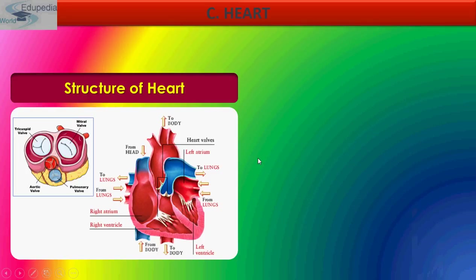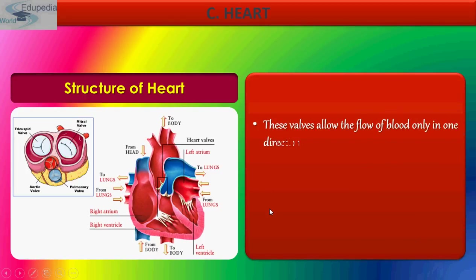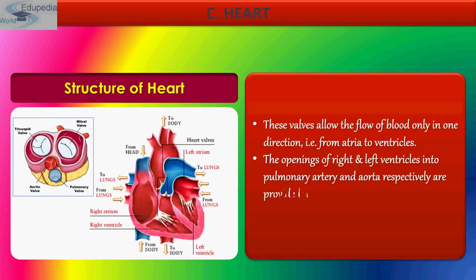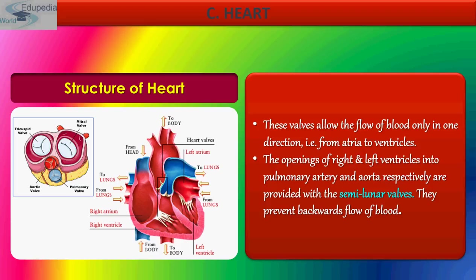These valves allow the flow of blood only in one direction, that is from the atria to the ventricles. The openings of the right and the left ventricles into the pulmonary artery and aorta respectively are provided with semilunar valves, which prevent backward flow of blood.